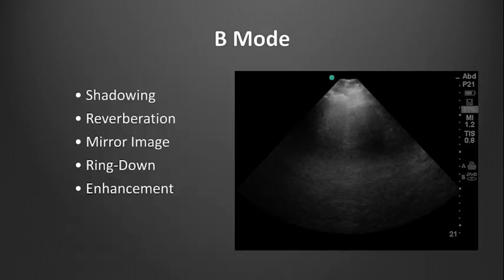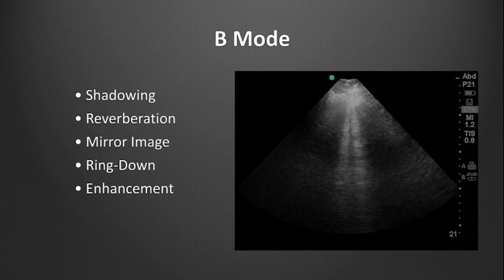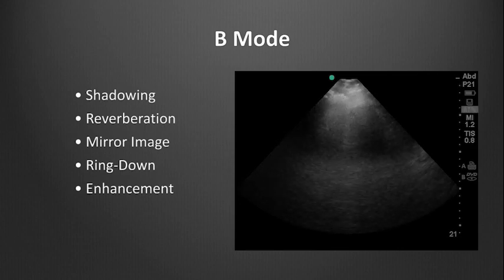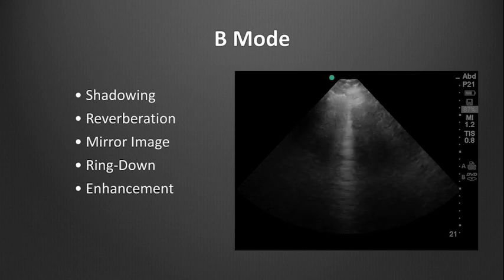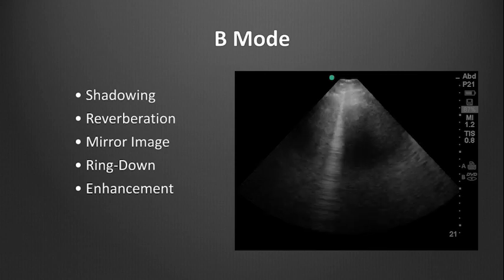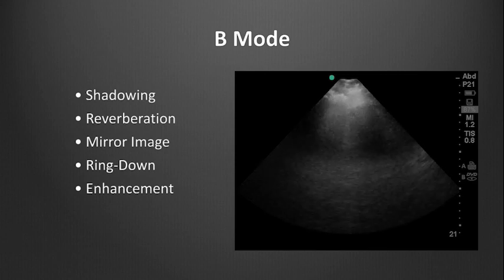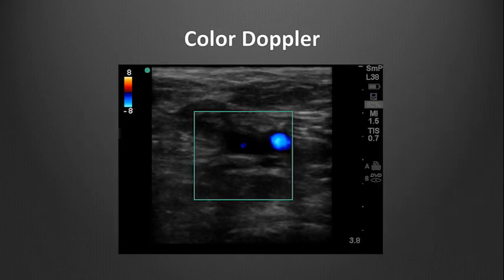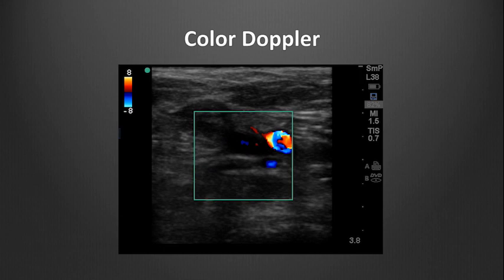Several types of artifacts can be seen in B-mode, the regular scanning mode used to find organs and guide procedures. These include shadowing, reverberation, mirror image, ring down, and enhancement. We will also discuss how artifacts can arise during the use of color Doppler.